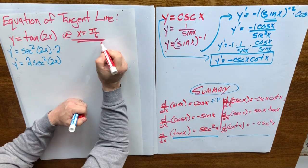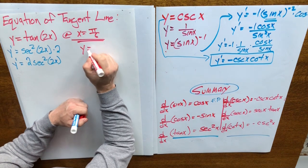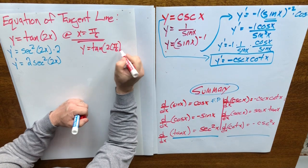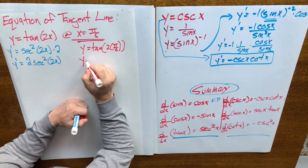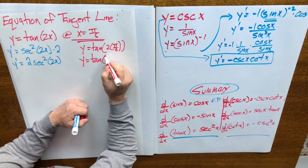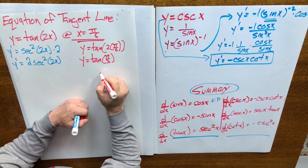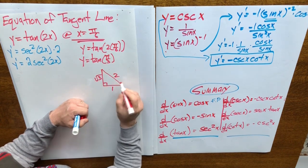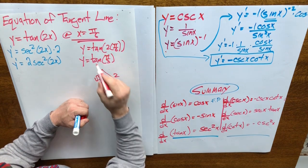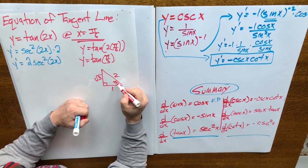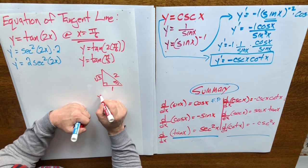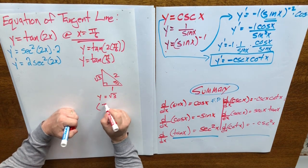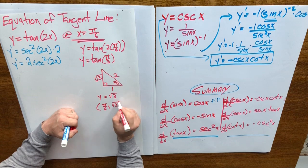At x equals pi over 6, what's the value of y? Y equals the tangent of 2 times pi over 6, which simplifies to tangent of pi over 3. Looking at the special angle triangle — sides 2, 1, root 3 — the tangent of pi over 3 is opposite over adjacent. So y equals root 3. We have the ordered pair (pi over 6, root 3).